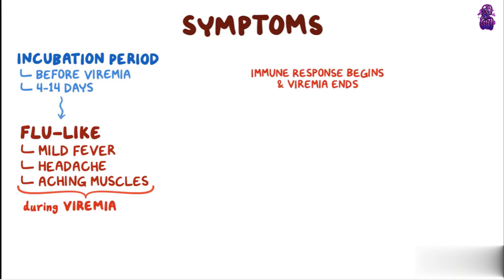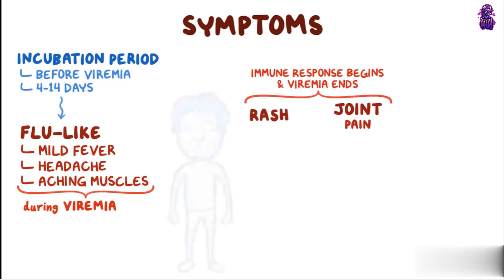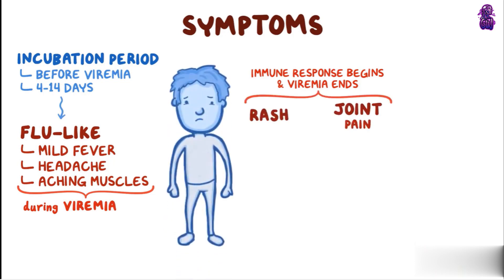Once the immune response begins and the viremia ends, these symptoms go away, and some individuals will then develop a rash and/or joint pain. The rash appears as uniform redness of the cheeks, but not the area around the mouth, giving the classic fifth-disease slapped cheek appearance. A lace-like rash might also appear on the trunk and the limbs.